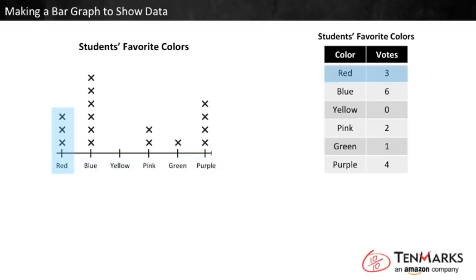For example, red got three votes so there are three X's above the red category. And yellow got zero votes so there are zero X's above the yellow category.